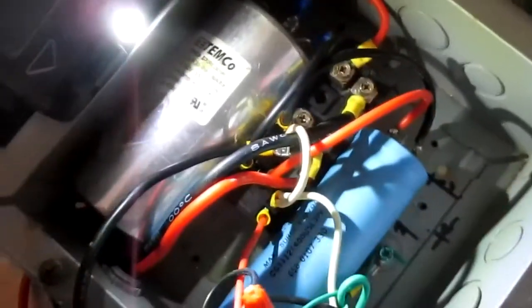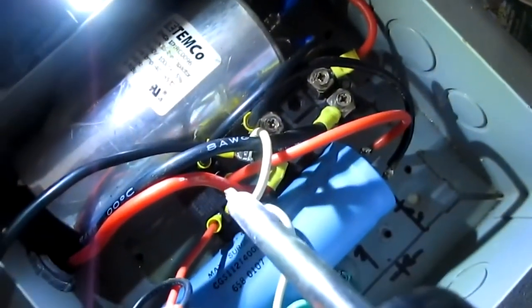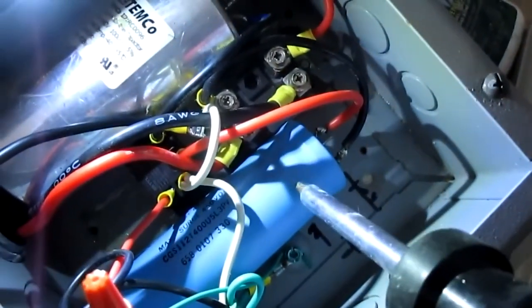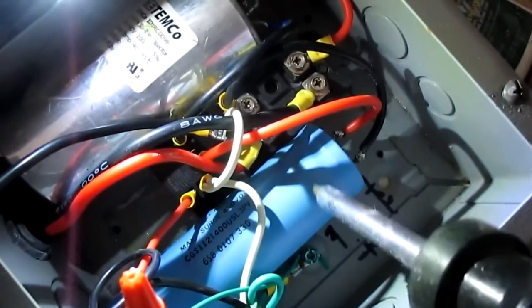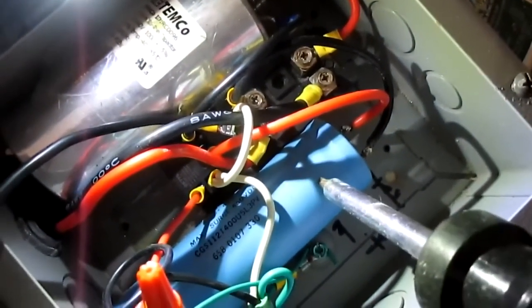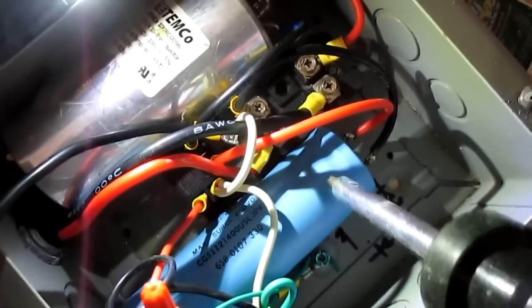When this relay is activated via this timer circuit, it's given power to flip the relay. By flipping the relay it disconnects this capacitor from the circuit, and this is the capacitor that drops the voltage from 140 volts DC to about 16 volts DC.